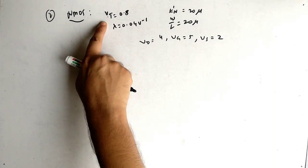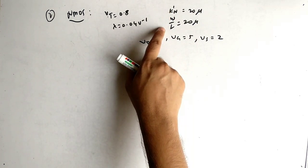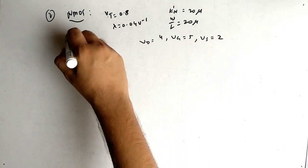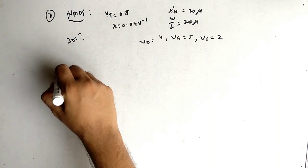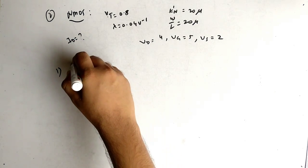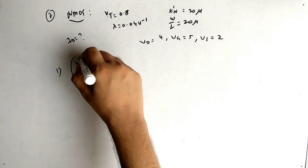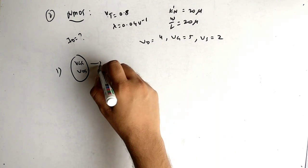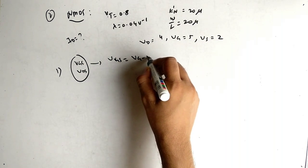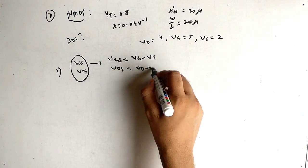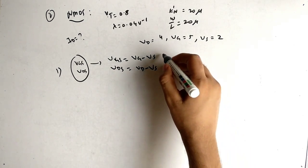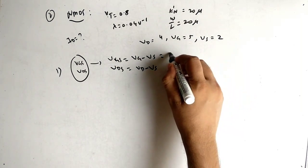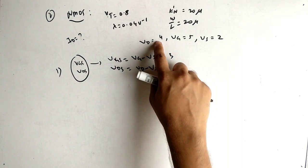Example 2: NMOS with a given threshold voltage, λ, K'N, and W/L. This time we are given VD, VG, and VS instead of VGS and VDS directly. We need to find ID. First, derive VGS = VG − VS and VDS = VD − VS.